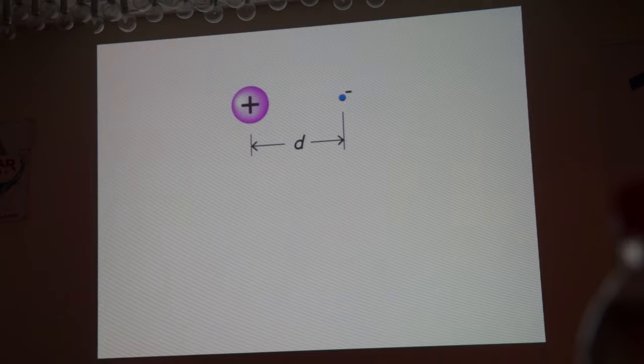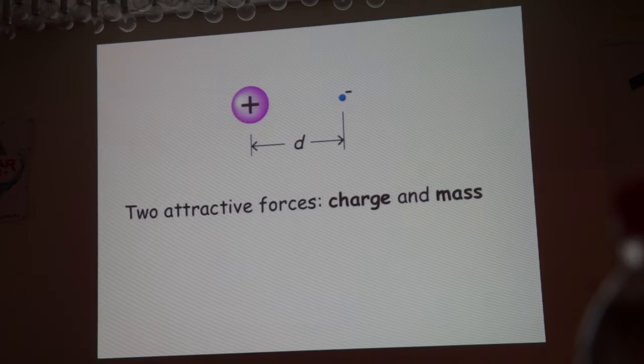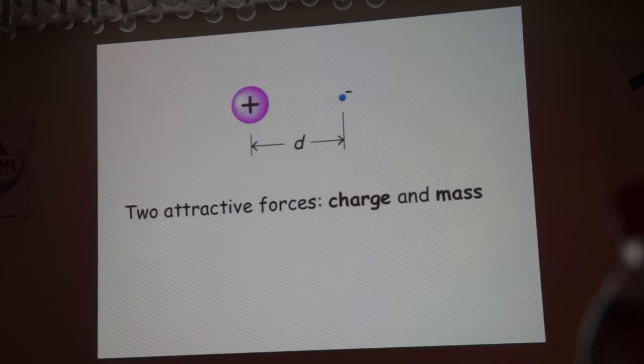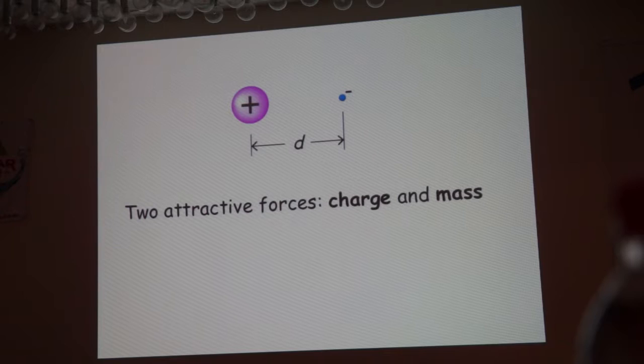If you put a proton next to an electron at distance d, there's an attractive force - but there are actually two attractive forces. The first is the charge force, the electrostatic pulling force. And then also mass, because the proton and electron have mass, giving a gravitational attraction. The question is: which force is greater? I think most people would estimate that the charge force is greater than the gravitational force. By how much? It's not so easy to answer.